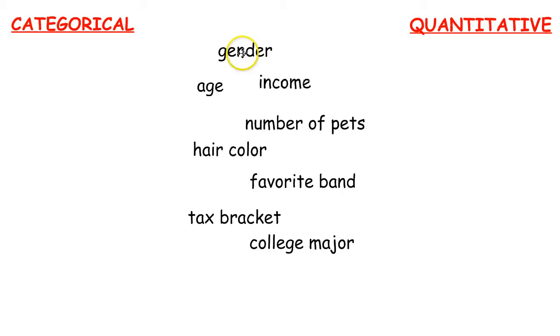Now let's look at the different types of variables and further distinguish between categorical and quantitative. Gender, we generally break down by male and female. Those are the two categories and it is not a number. So that's going to be categorical.